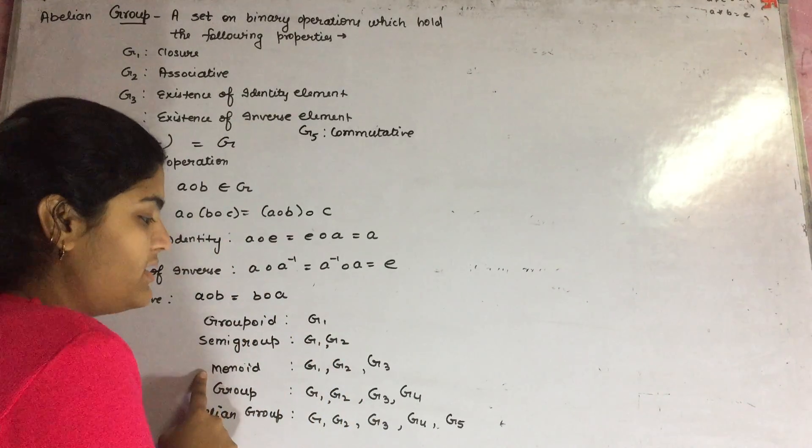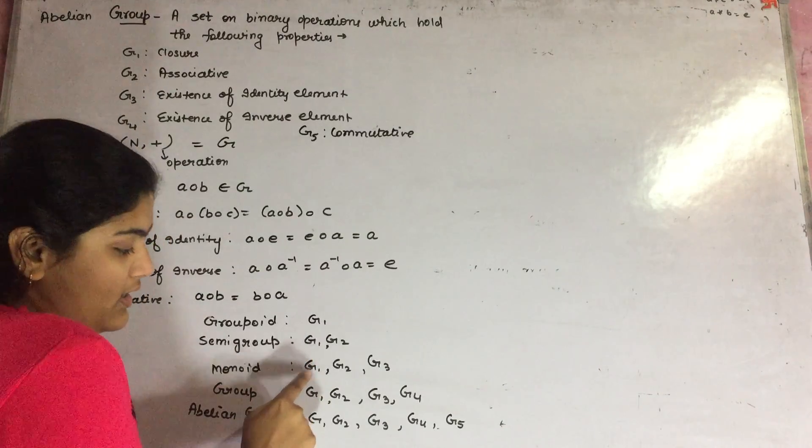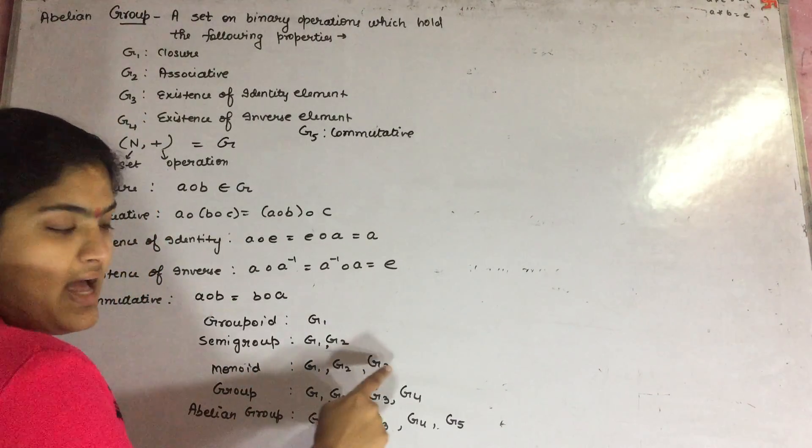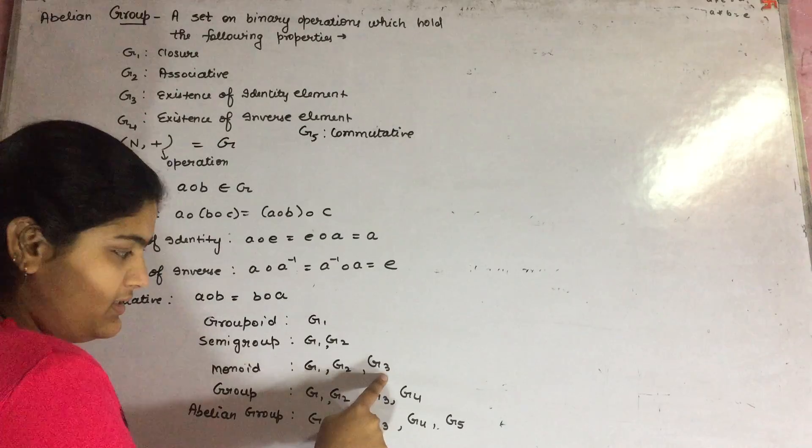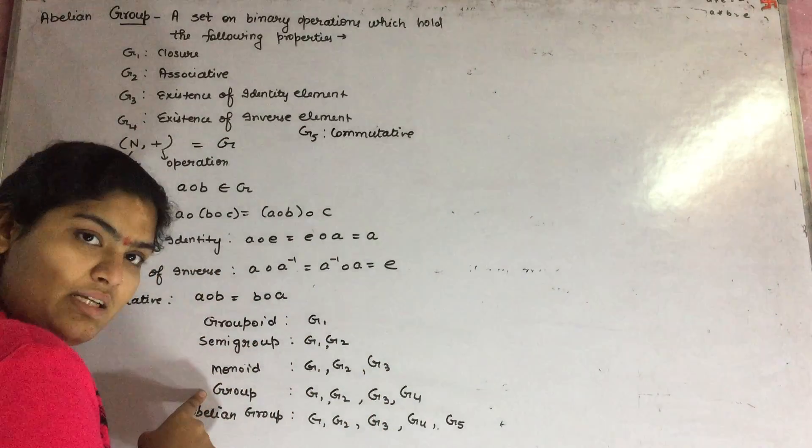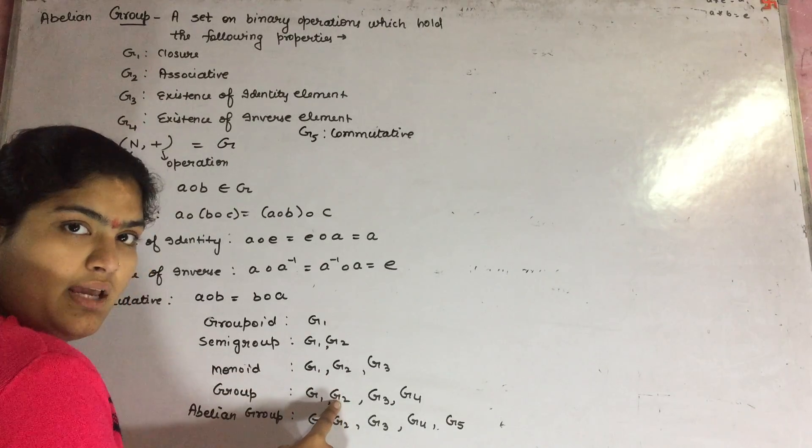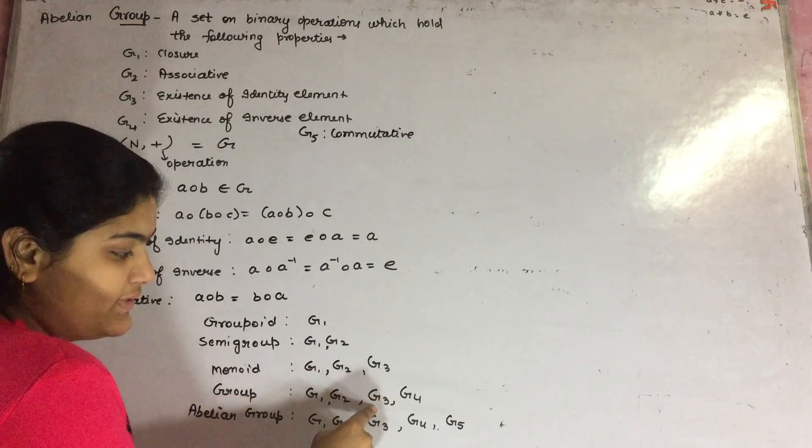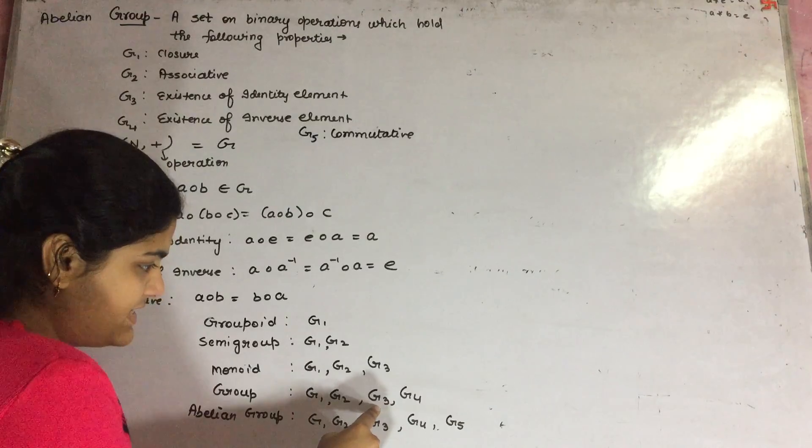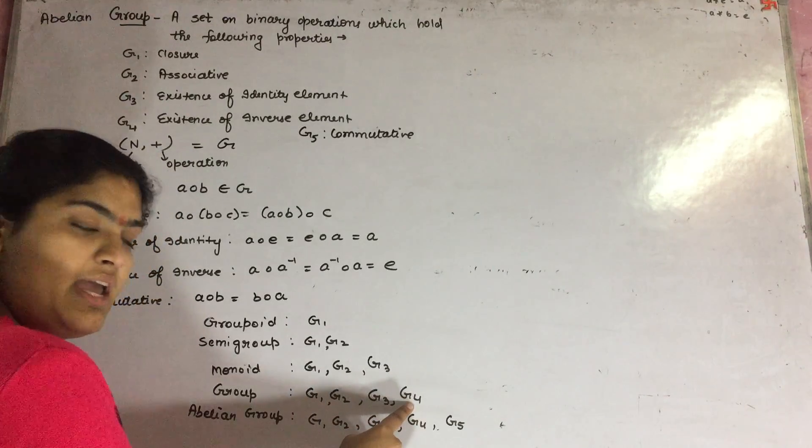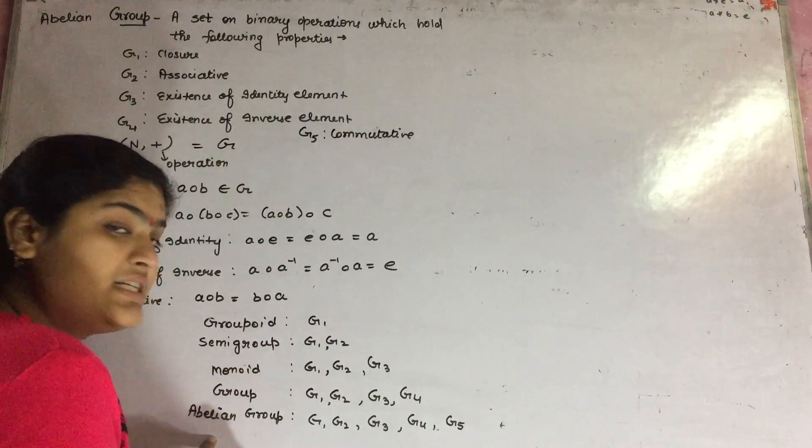A set is said to be a monoid if it holds closure, associativity, and existence of an identity element. A set is said to be a group if it holds closure property, associativity, existence of identity element and existence of inverse.